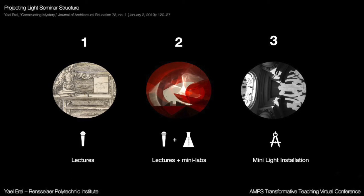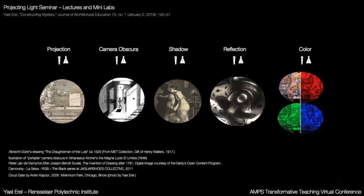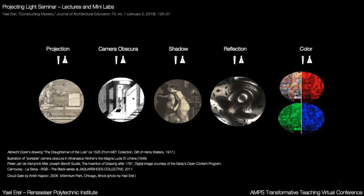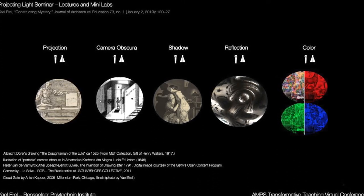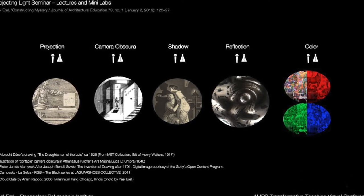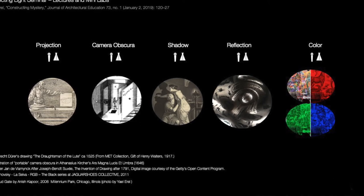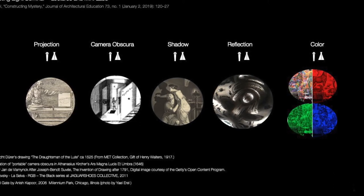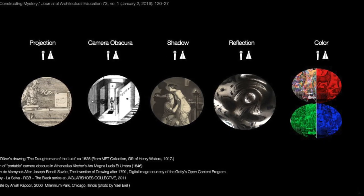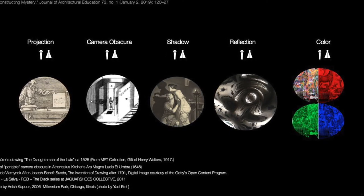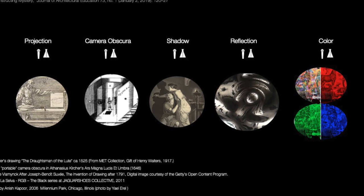The mini-labs are intended to be quick exercises that ask busy architecture students to observe specific conditions, identify them, and respond to them. The setting of the seminar changed the way we share information and explore light, space, and perception. Through each lab I'm going to present here, I would like to bring up some conceptual differences that emerged between the different settings, linking to the different seminar content.